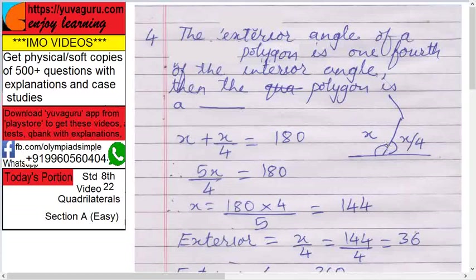So this interior angle and exterior angle, they are always in a linear pair. What do you mean a linear pair? You have studied it in fifth, sixth, seventh. Right. So linear pair means total is 180. So x plus x upon four equals to 180. Now solve this.